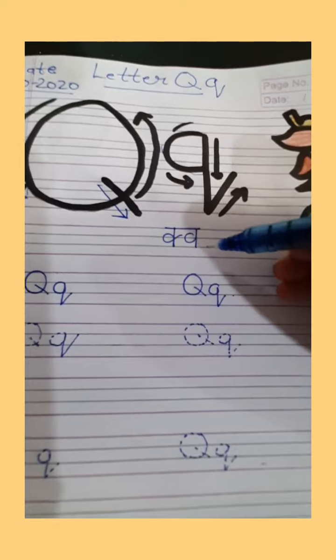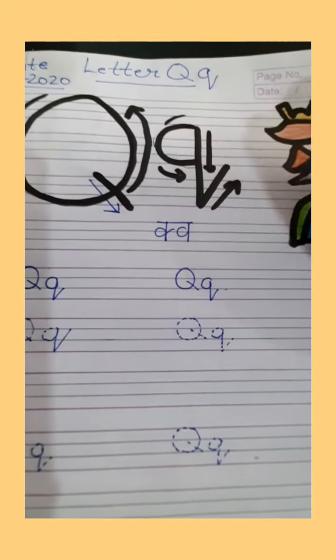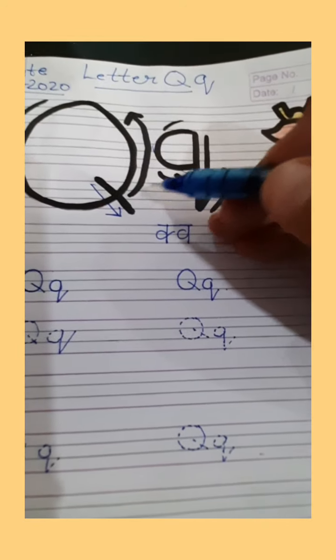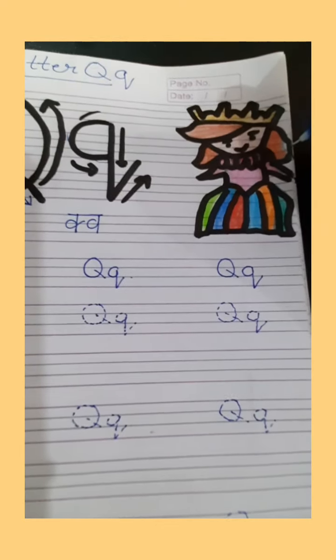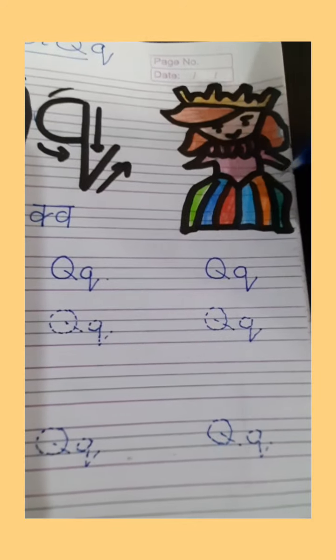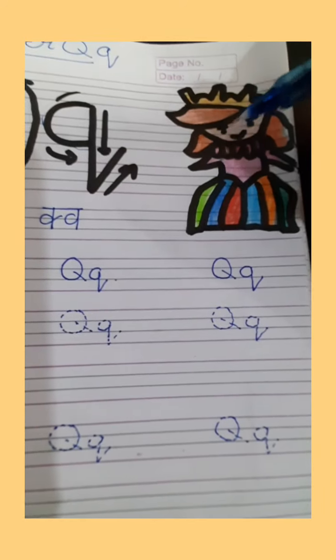Aadha, ker, wa. Que. Okay, better? Q says que. Que, que. Queen. Yes. This picture is queen.